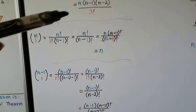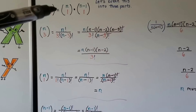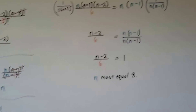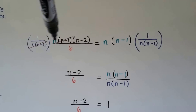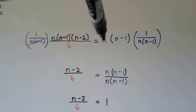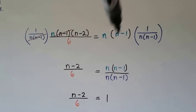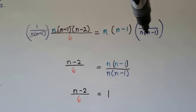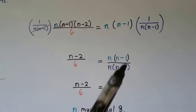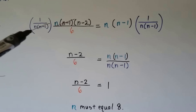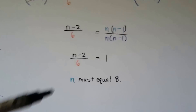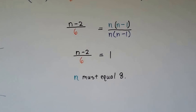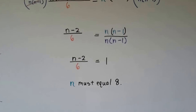Now we can put these together. The right side equals n times n minus 1. With 3 factorial equal to 6, our equation is n times n minus 1 times n minus 2 divided by 6 equals n times n minus 1. Multiplying both sides by 1 over n times n minus 1, the right side becomes 1, and on the left the n times n minus 1 cancels, leaving n minus 2 divided by 6. For this to equal 1, n minus 2 must be 6, so n minus 2 equals 6, meaning n equals 8.